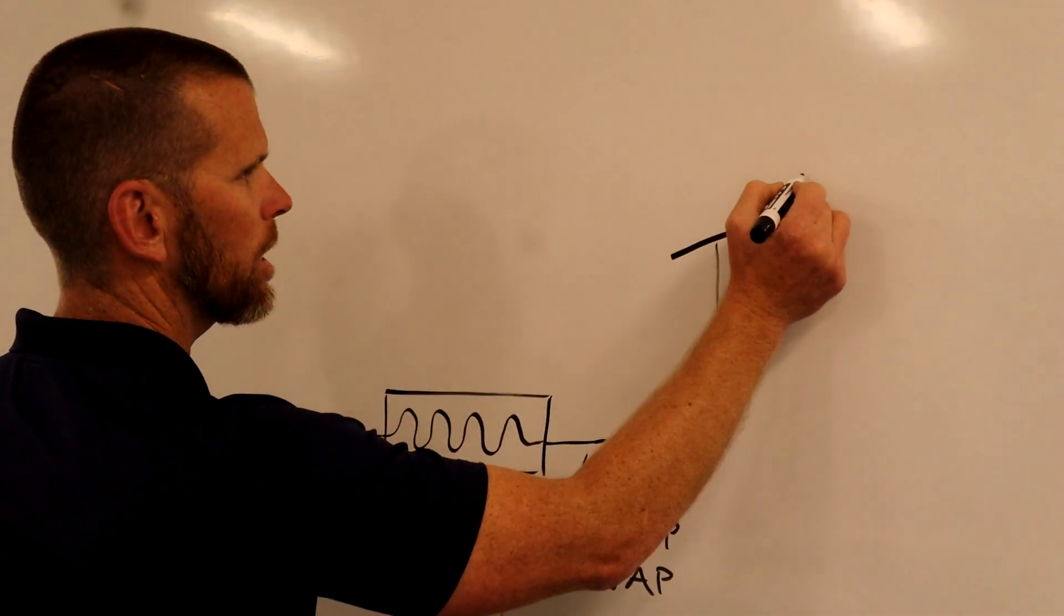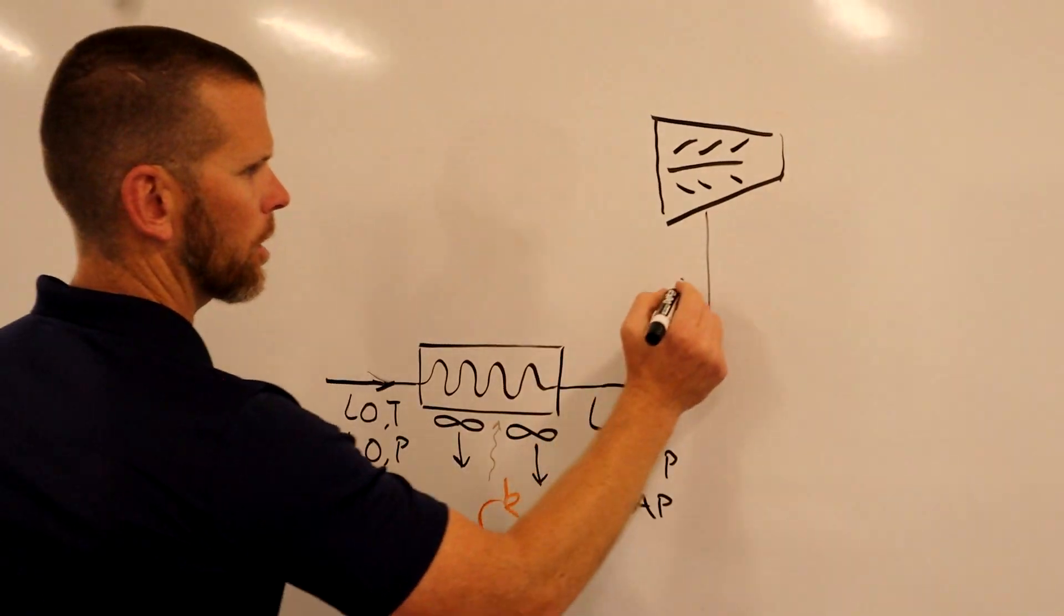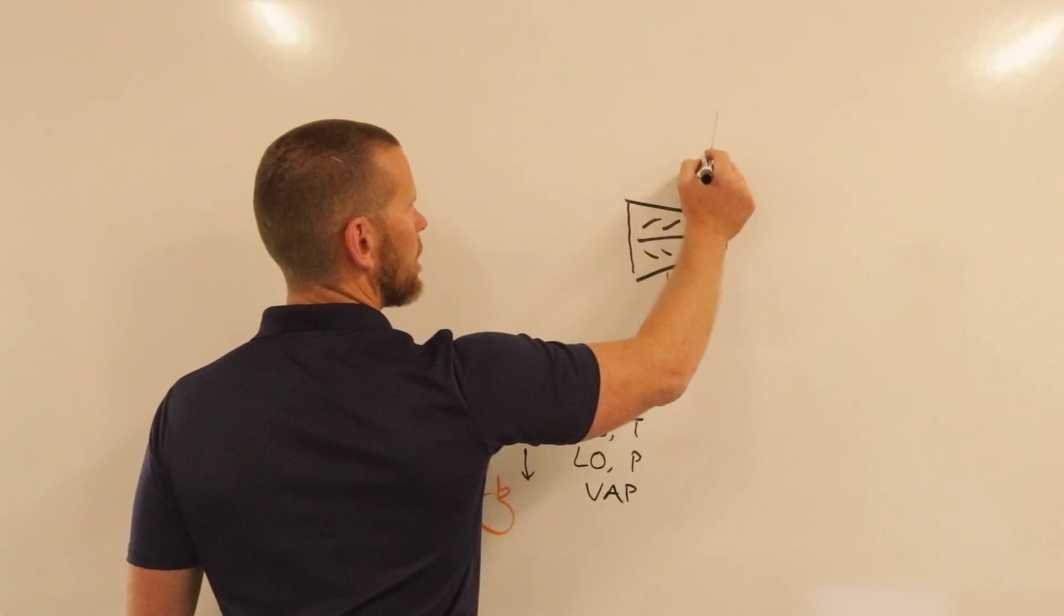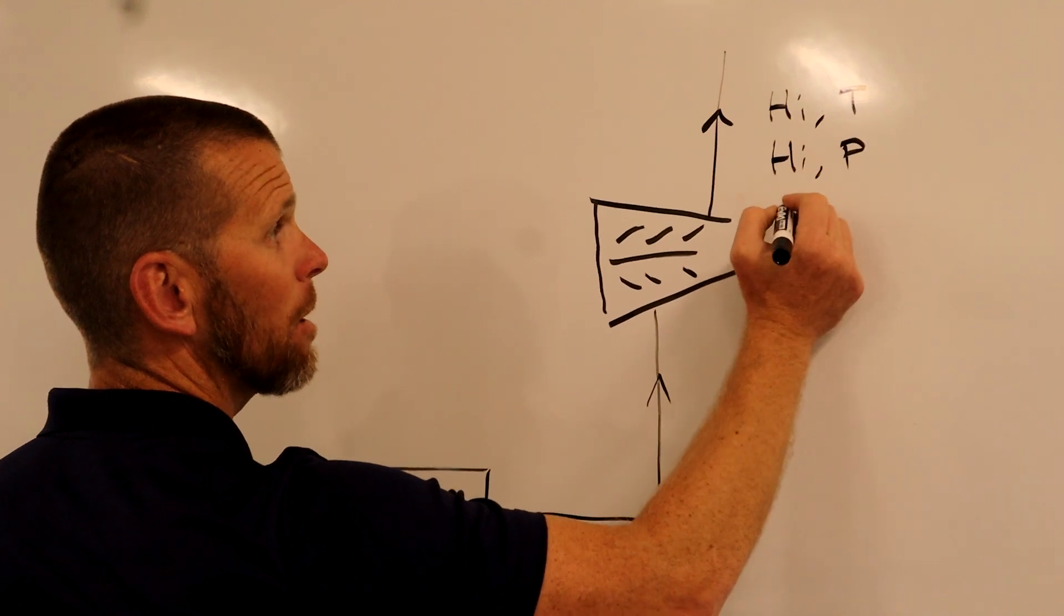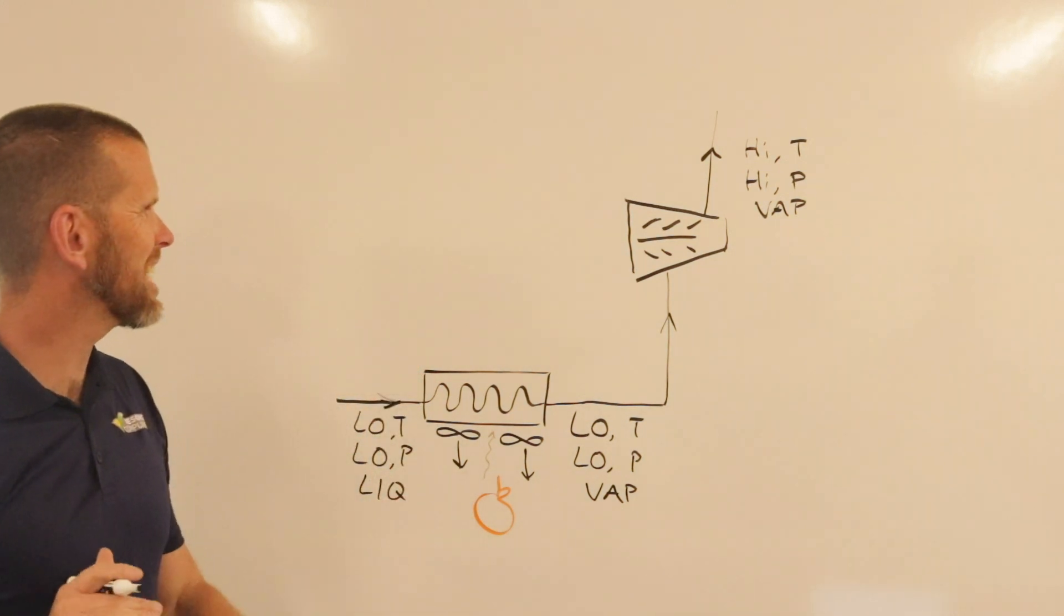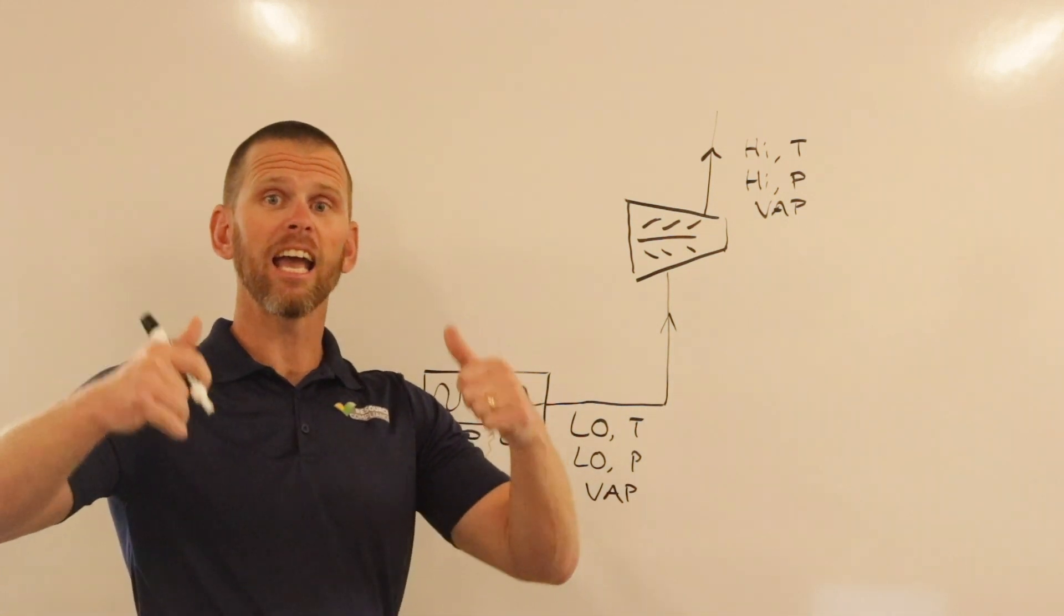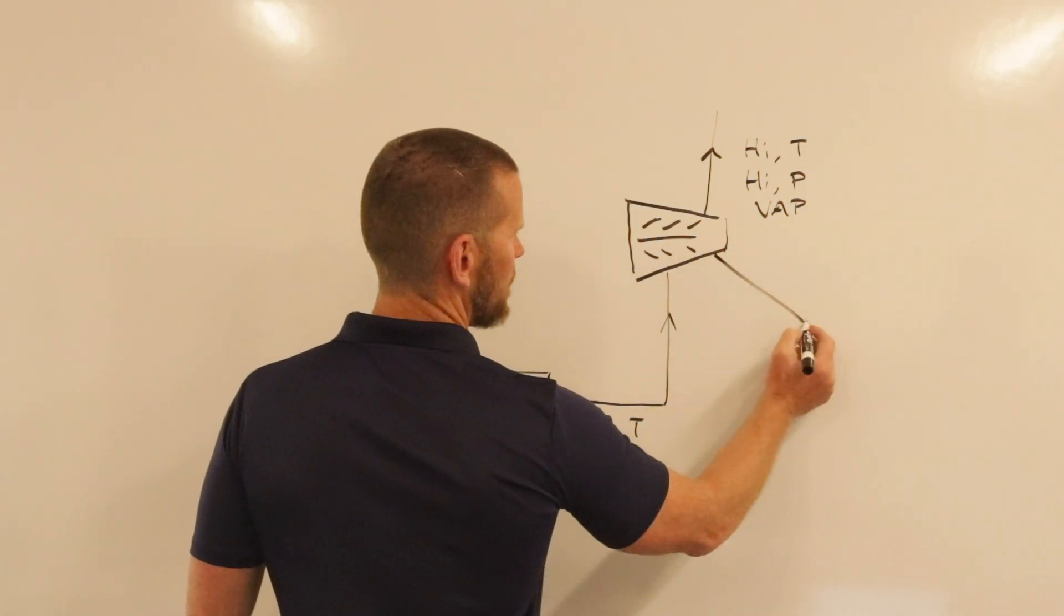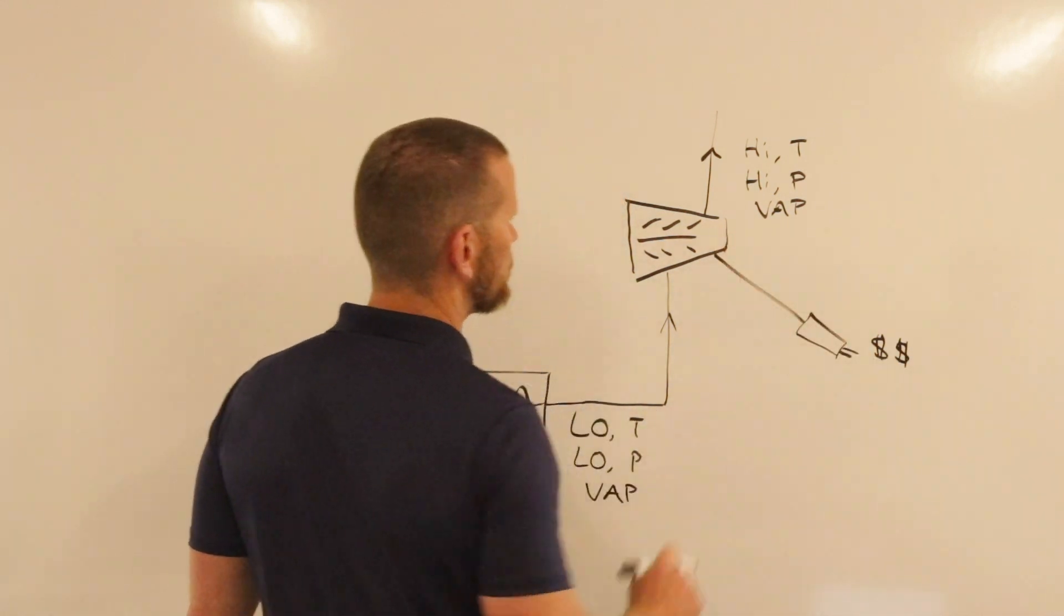We take it to a compressor. This low temperature, low pressure vapor enters the compressor and exits as high temperature, high pressure vapor. Remember, compressors hate liquids - no liquid should go through the compressor. We've taken our vapor and squeezed it down. In that process, the pressure increased and the temperature also increased. It's worth pointing out that this compressor requires a lot of energy - it's expensive to run this machine with a lot of horsepower.